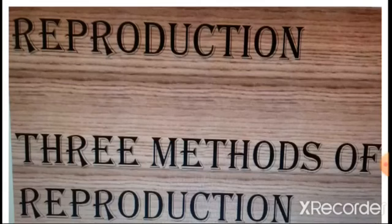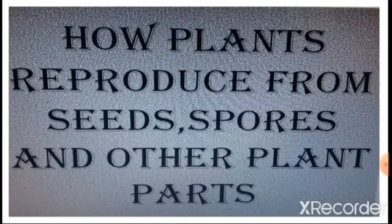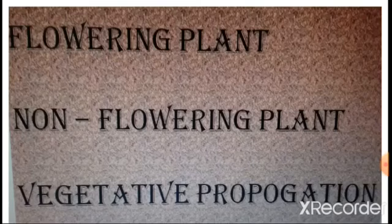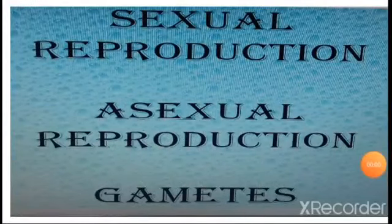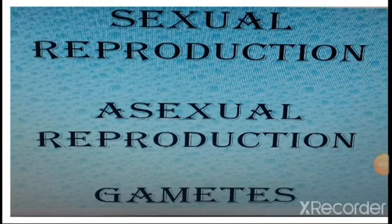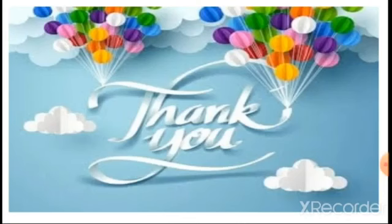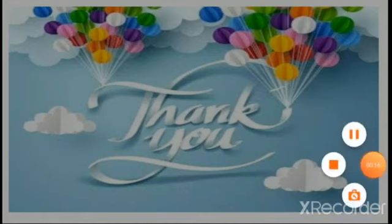Today we have discussed reproduction, three methods of reproduction, and how plants reproduce from seeds, spores, and other plant parts. We also covered flowering plants, non-flowering plants, vegetative propagation, sexual reproduction, asexual reproduction, and gametes. I hope you understand today's class. Revise these topics and do the worksheet. Thank you, children.